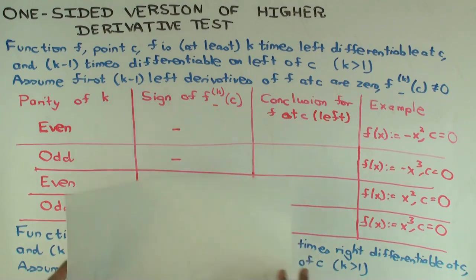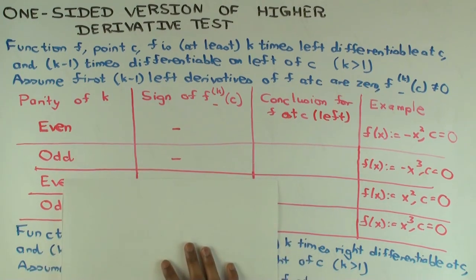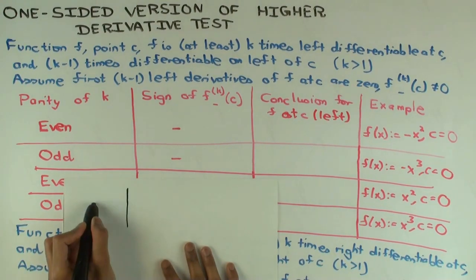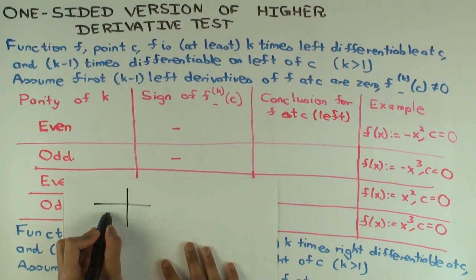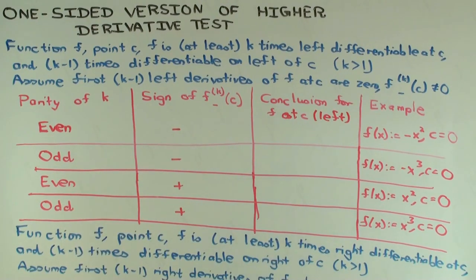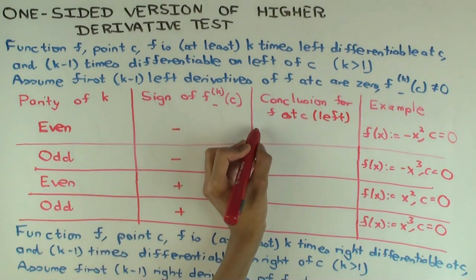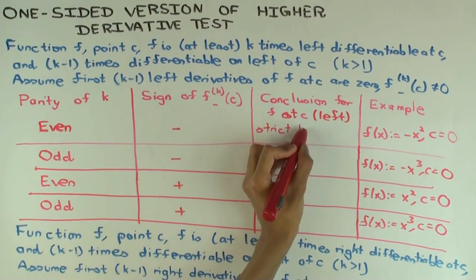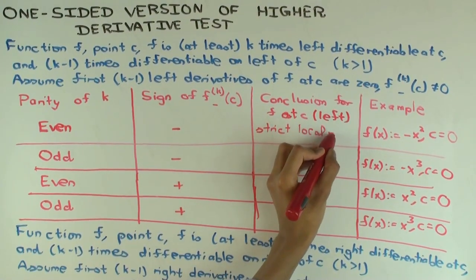Let's make a picture for negative x-squared on the immediate left of 0. What does it look like? The conclusion — proof by picture — is a strict local maximum from the left. Let's fill in this table of four entries, then I'll come back and explain what's happening.